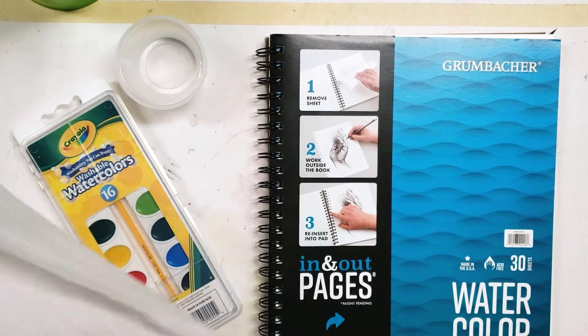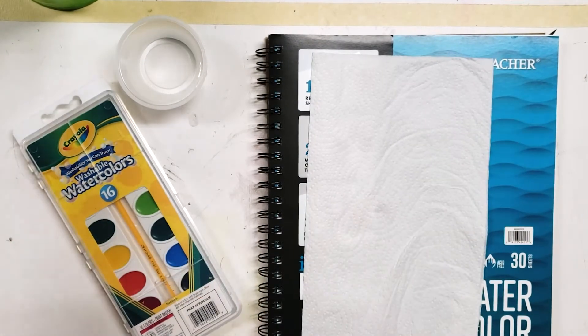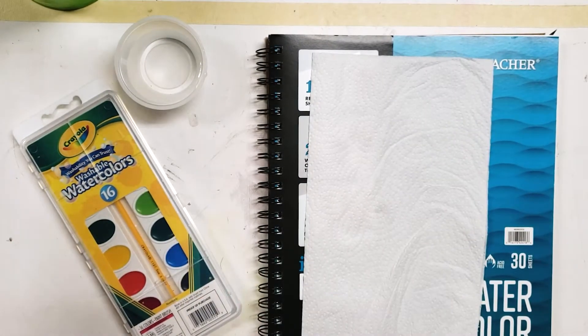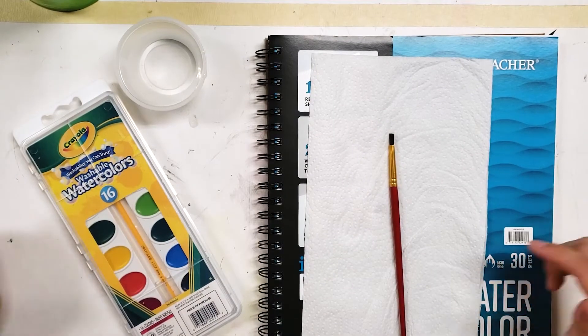We have watercolor palettes and for this we're going to need a little bit of water, a paintbrush, a napkin and some watercolor paper.